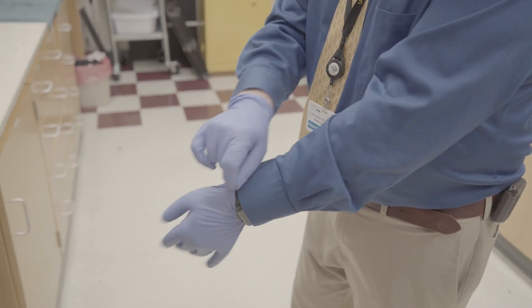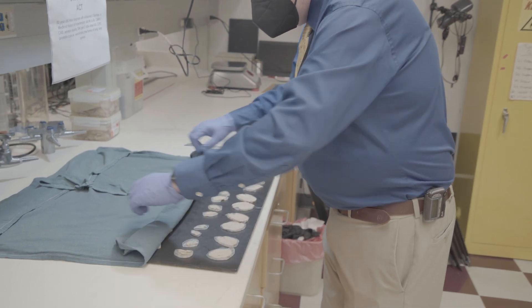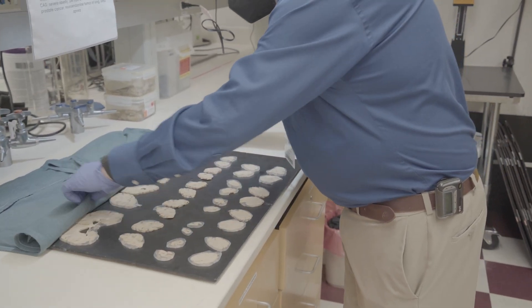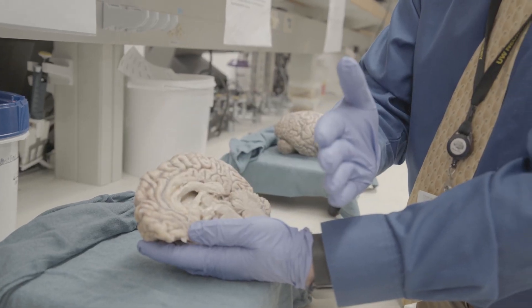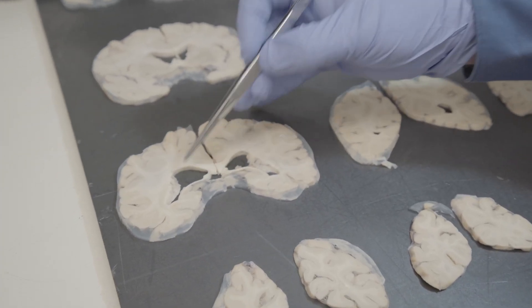We don't really understand how Alzheimer's disease starts. We do understand generally the parts of the brain that are affected earlier in disease than late, and so that's the area that we've tried to focus on, especially with the CAD project, which is to look in areas of the brain that are affected really early in Alzheimer's disease and even look at areas of the brain affected later.